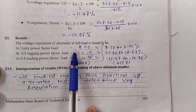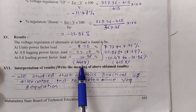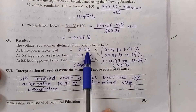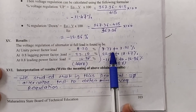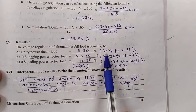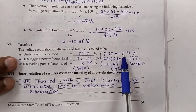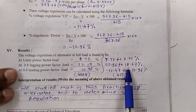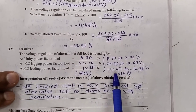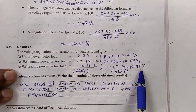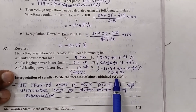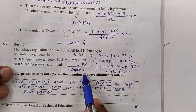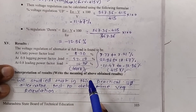In summary of results: at unity power factor, regulation is 8.33% for 440V and 7.77% for 415V. At 0.8 lagging power factor: 27.24% for 440V and 22.96% for 415V. At 0.8 leading power factor: −14.96% for 440V and −11.47% for 415V. Regulation down values for 415V are 7.21% at unity, 18.67% at lagging, and −12.96% at leading power factor.